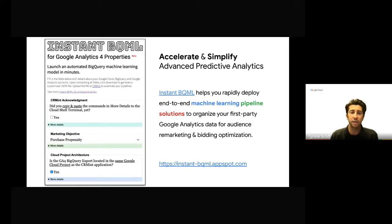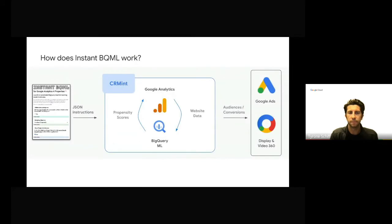The form takes approximately 30 minutes to complete, dramatically reducing the complexity and time typically needed to deploy these sophisticated solutions — from what used to take months to minutes. Instant BQML runs on a Google open source project called CRM Mint, which handles all of the automation and connects to all of the cloud services involved in executing the propensity modeling pipeline.